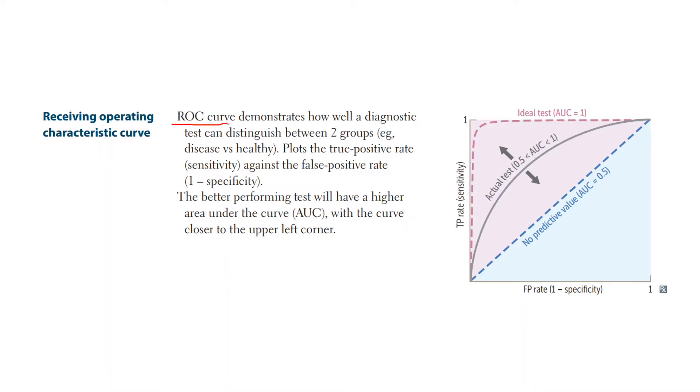The ROC curve helps demonstrate how well a diagnostic test can distinguish between two different groups, namely diseased versus healthy. It puts the true positive rate on the y-axis and the false positive rate on the x-axis.